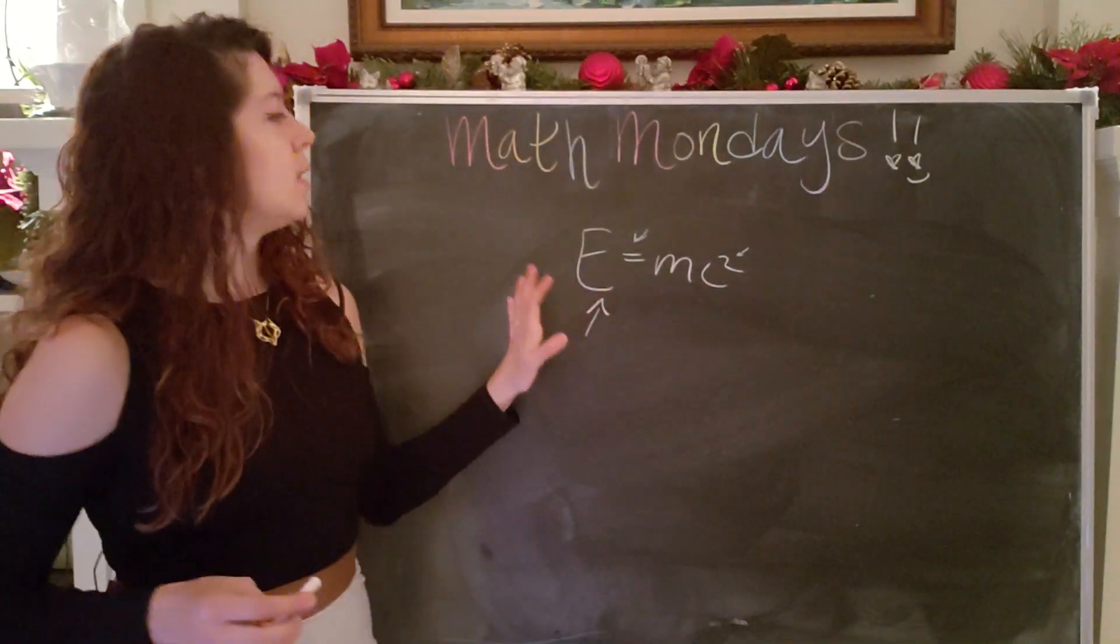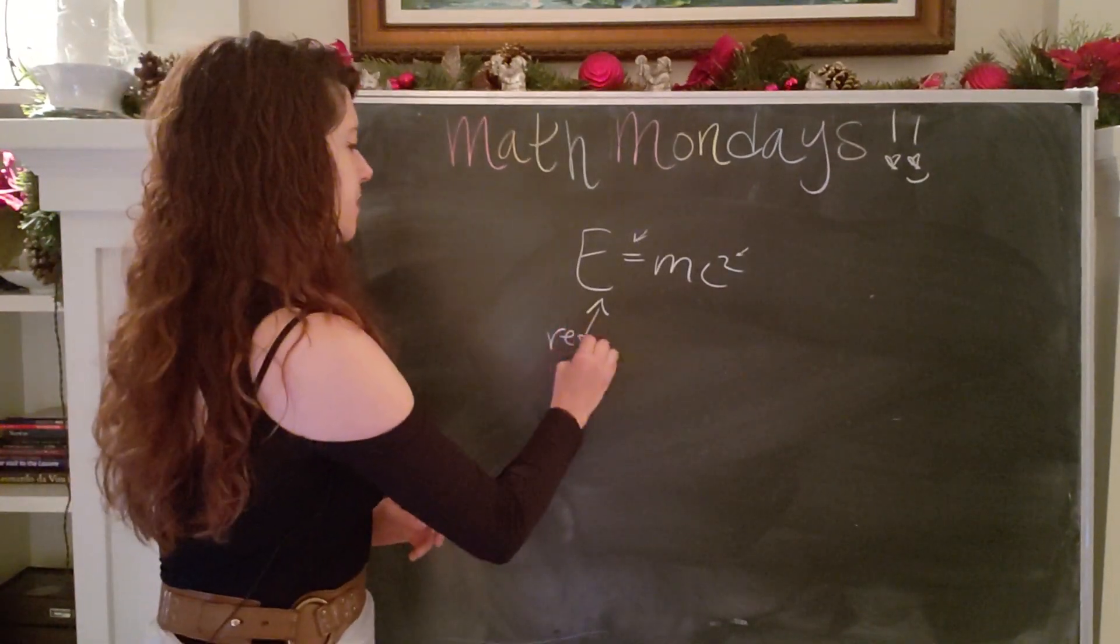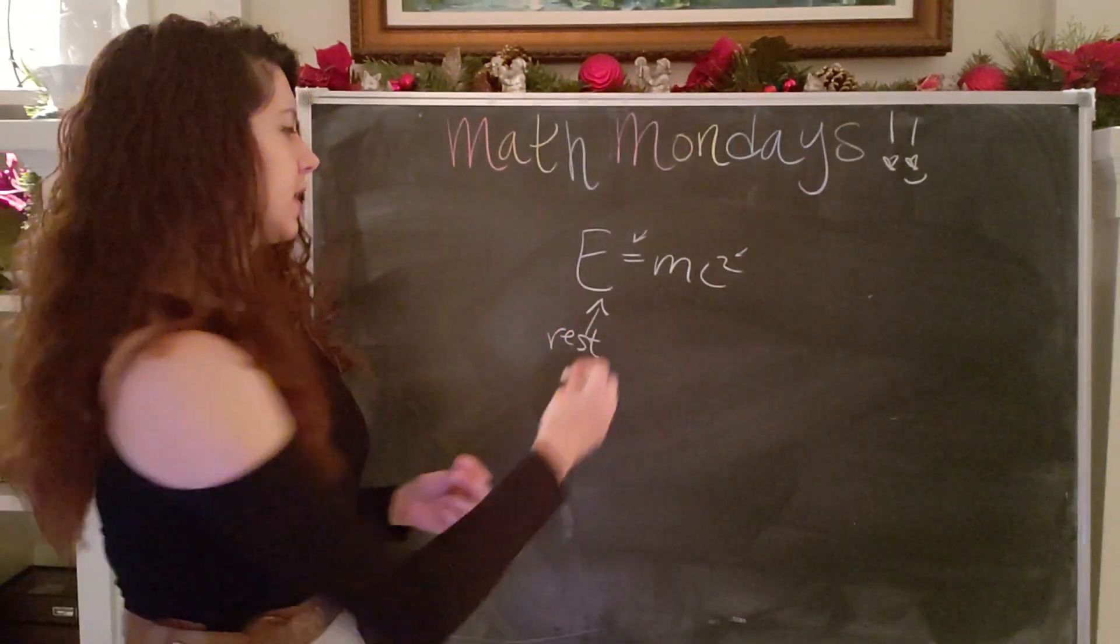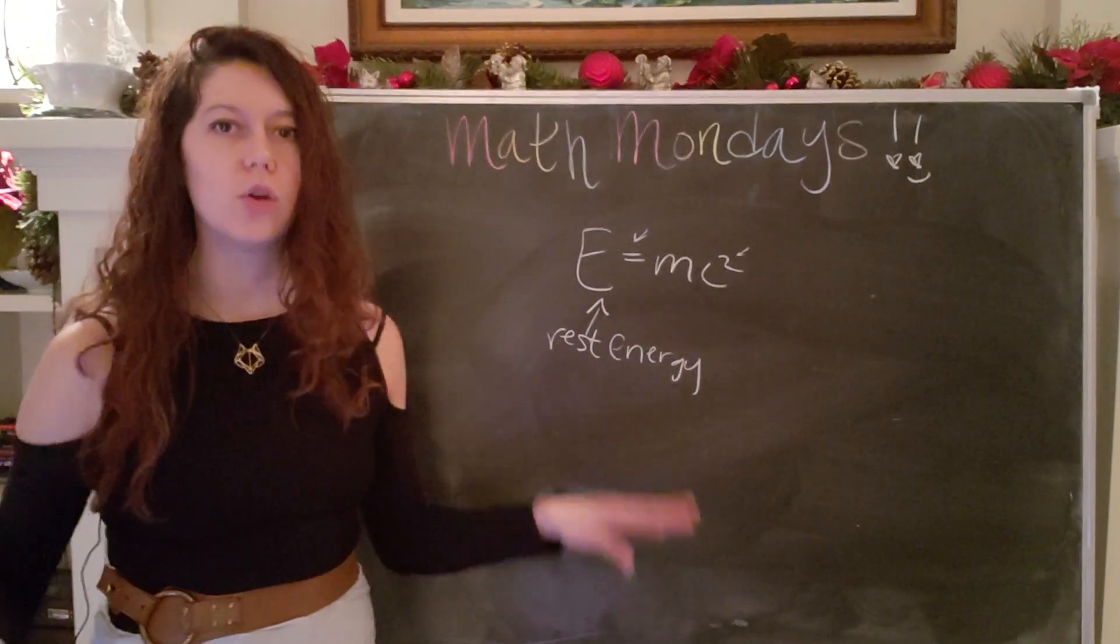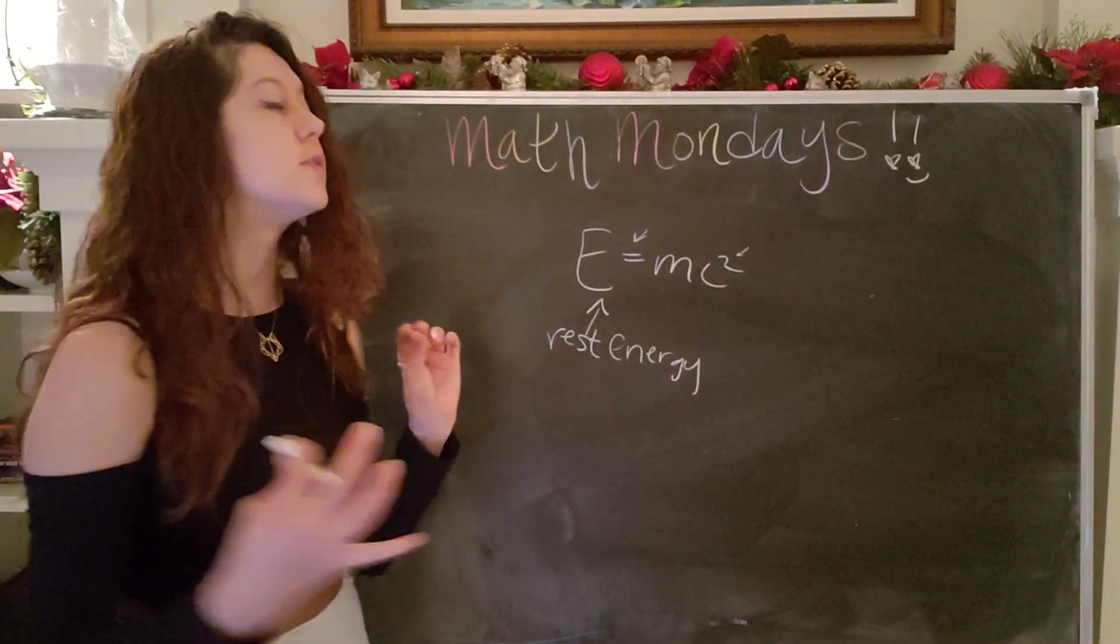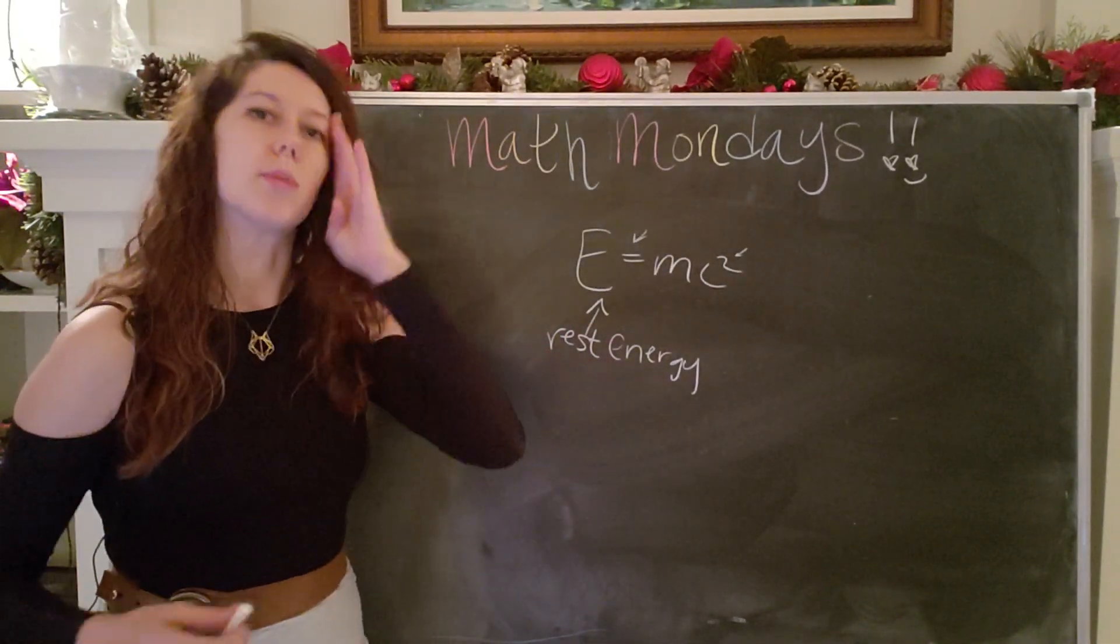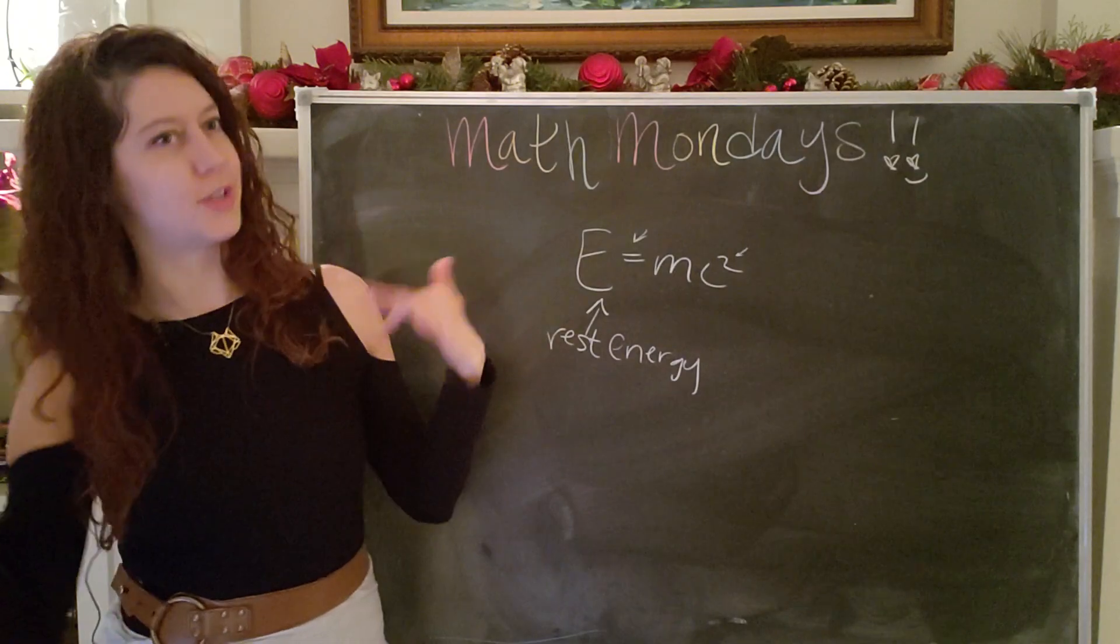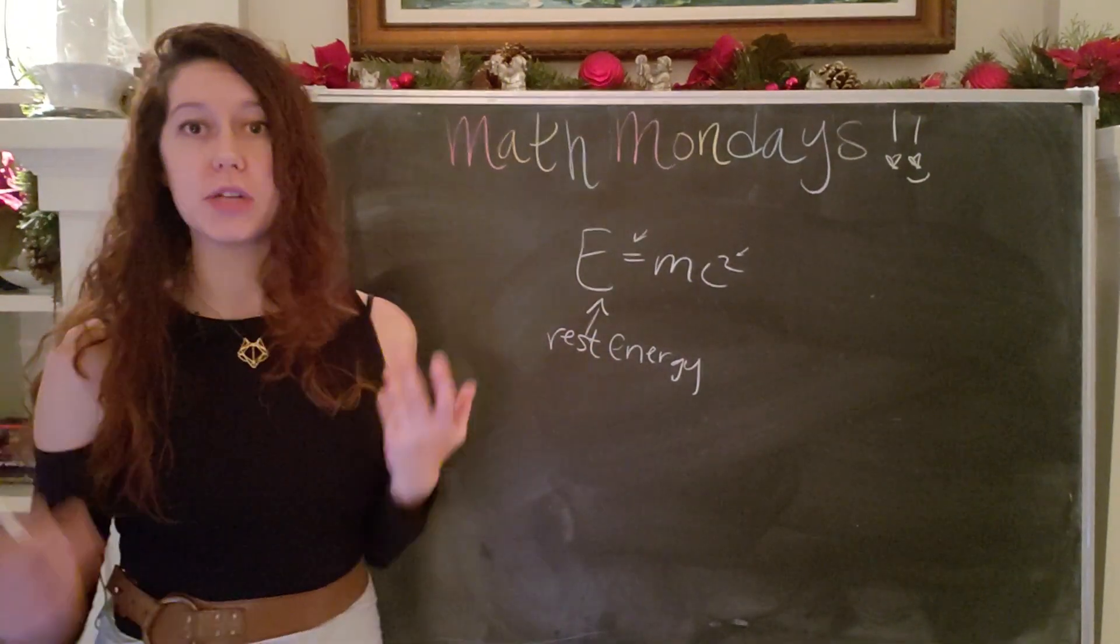So this E represents not just energy, but rest energy. And it's even more specific than that. It's the rest energy of a particular single fundamental particle. So that would be something like an electron or a proton or a neutron. Or if you wanted to really dive deeper, where you could talk about the rest energy of a particular quark.